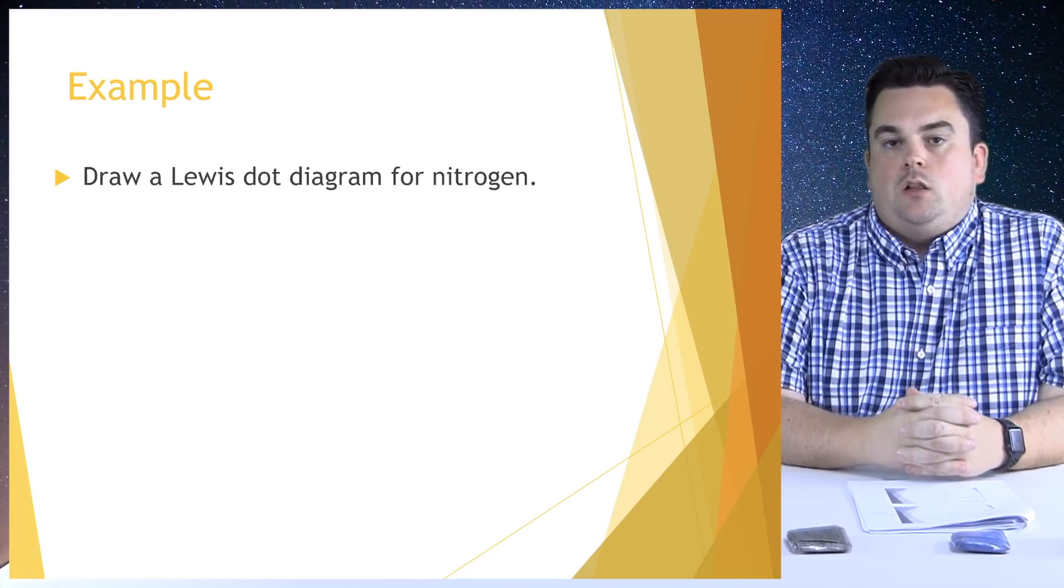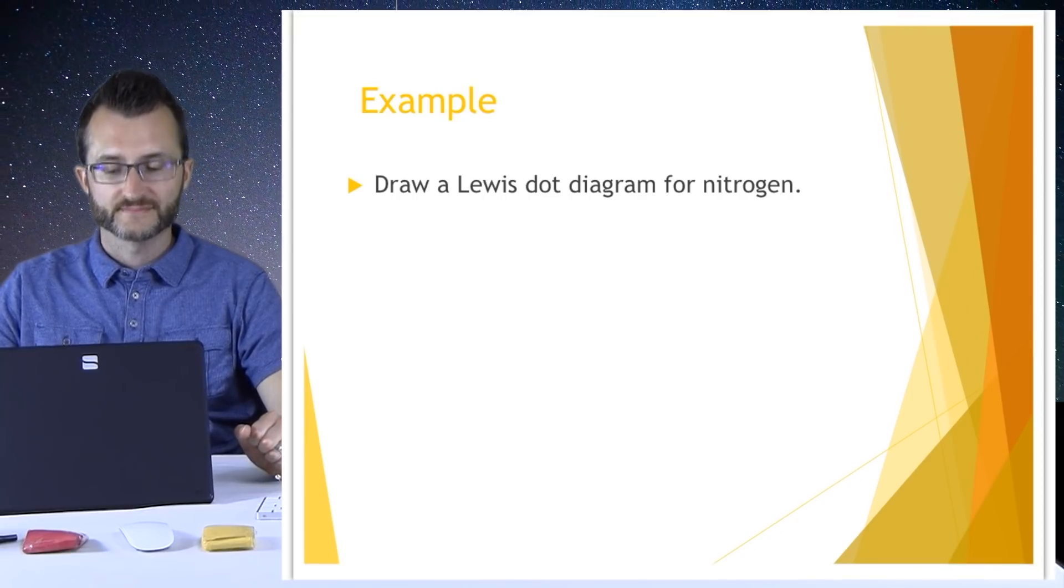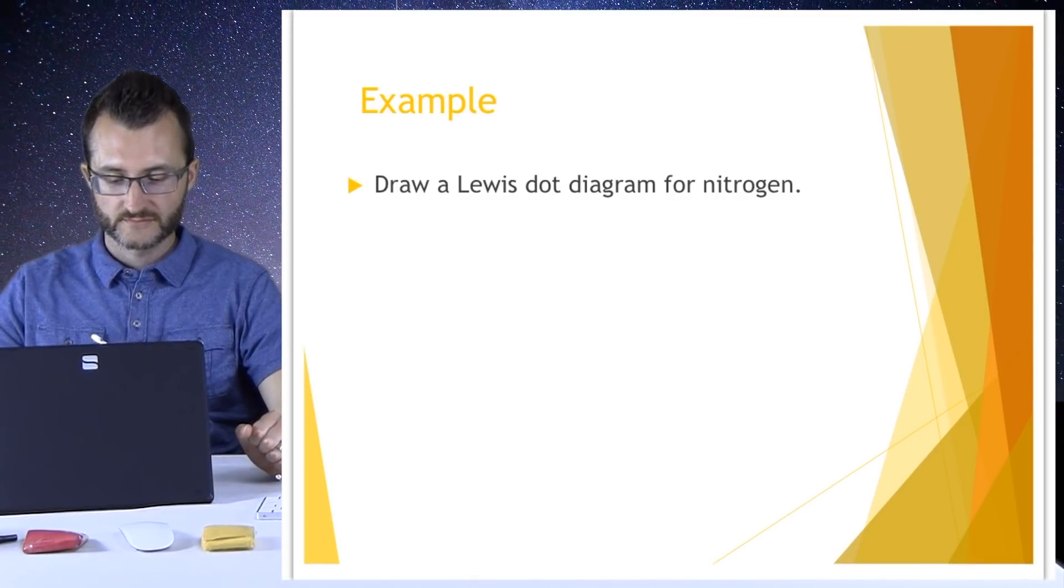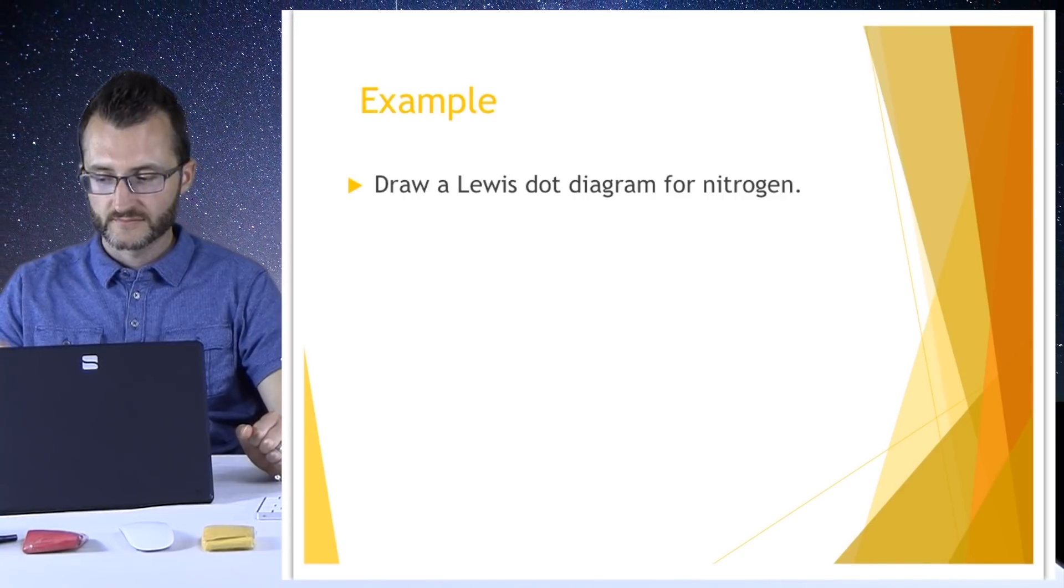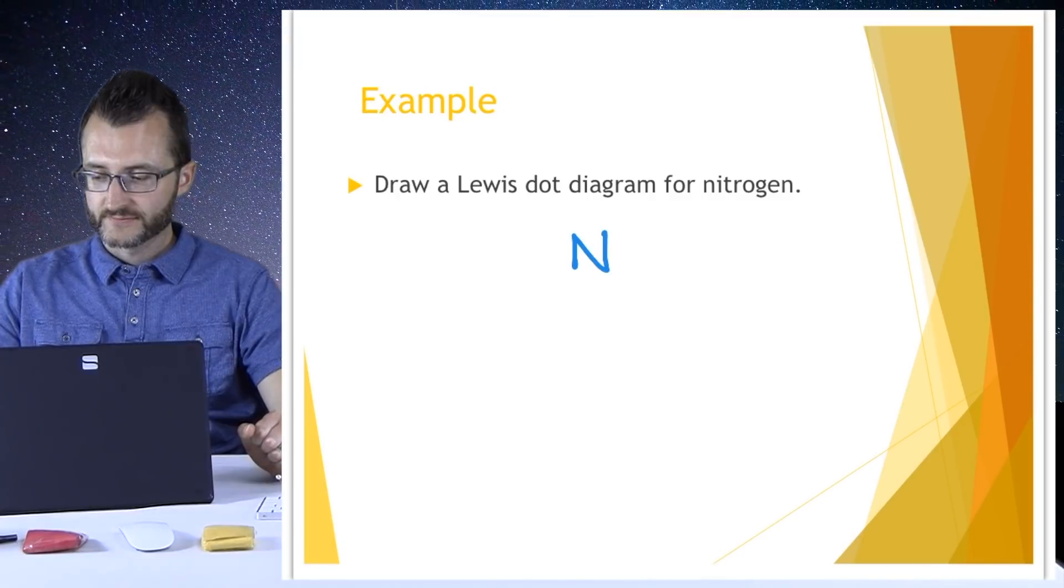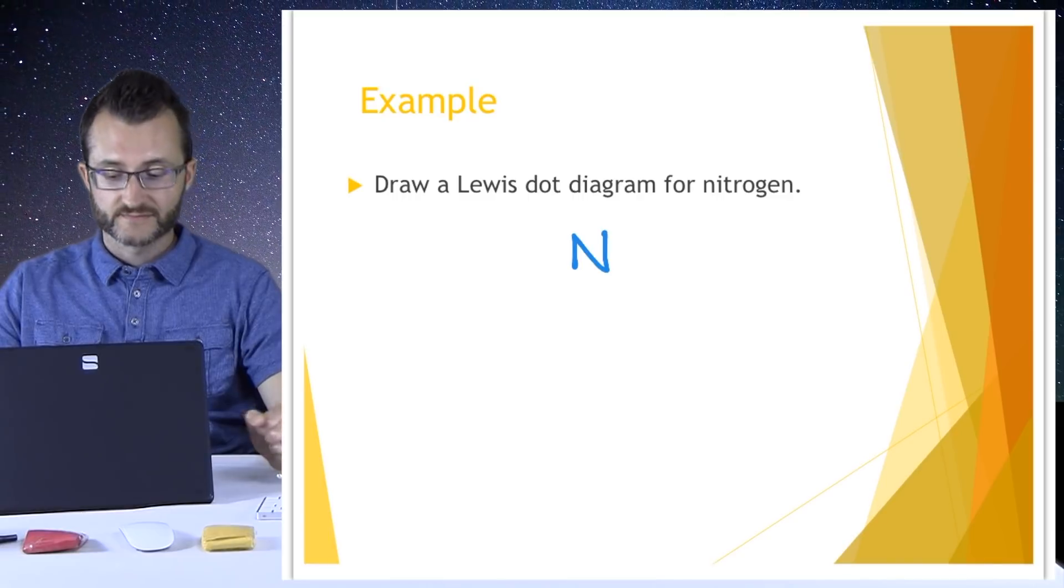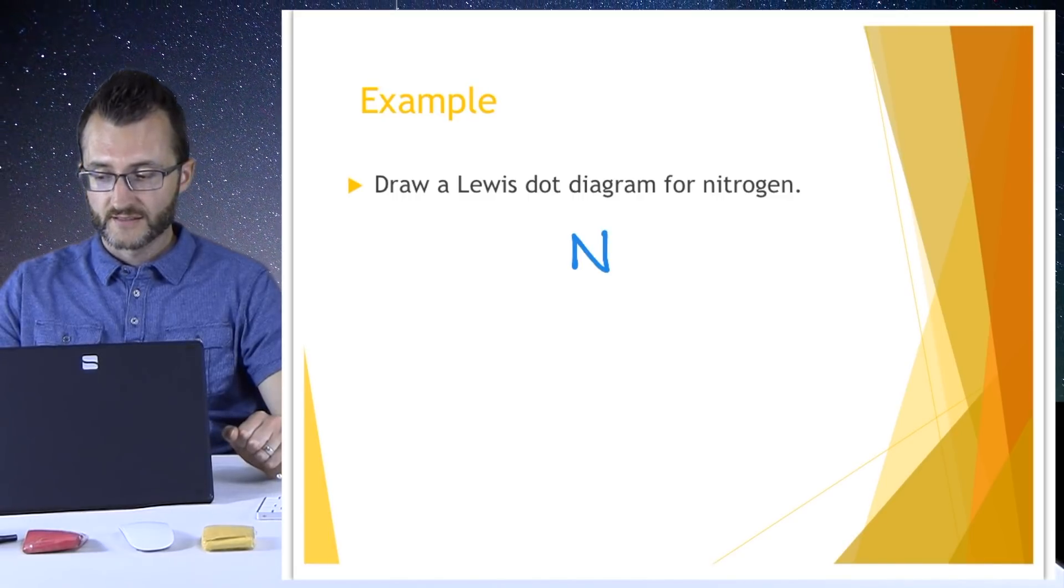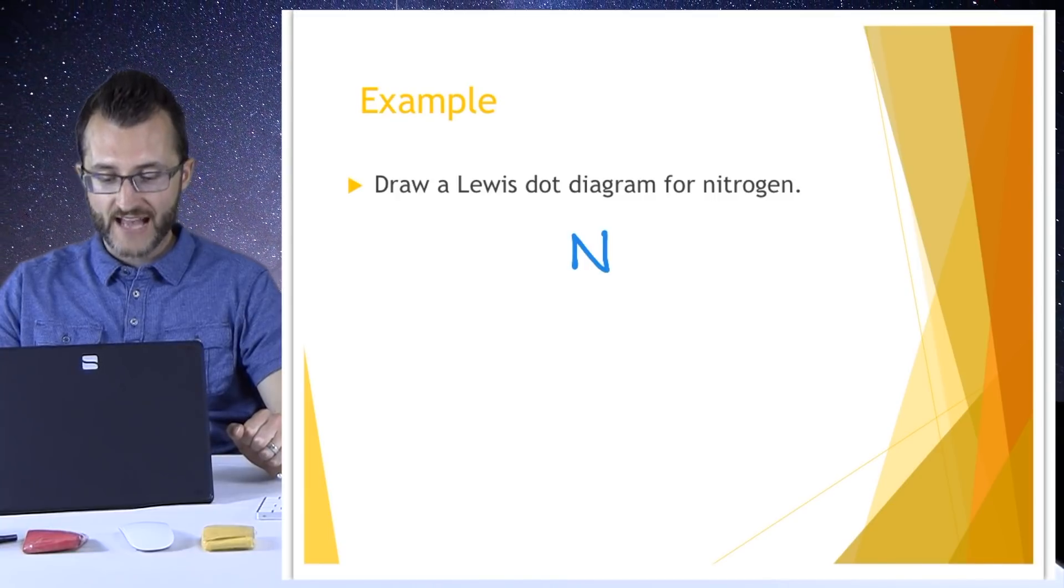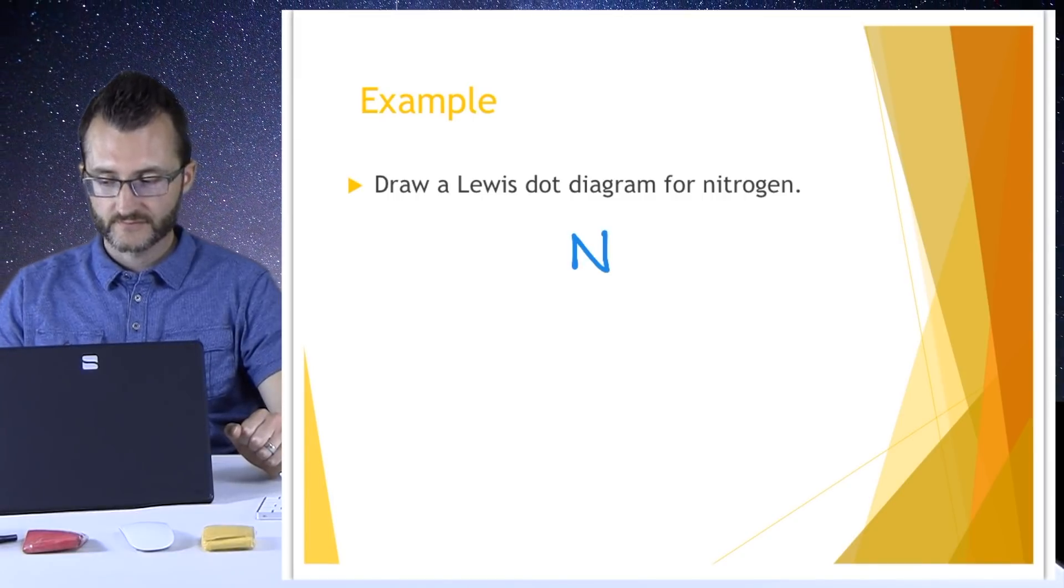We're going to do an example of how to draw a Lewis dot diagram. Are you ready? Let's draw a Lewis dot diagram for nitrogen. So the first thing we have to do is look up nitrogen on our periodic table. So nitrogen is N. I'm going to start with the N. So what do the dots represent in a Lewis dot diagram? They represent the valence electrons. And what are the valence electrons for nitrogen? It looks like in the last shell for nitrogen, there are five valence electrons. There are. So we should have a total of five dots. Now let's figure out where they go.